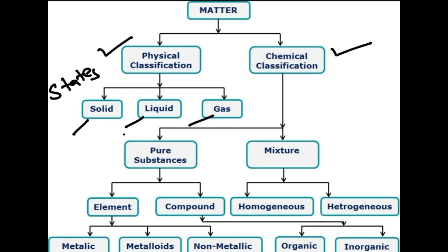There are actually four states of matter; the fourth one is plasma, which is often missing in basic charts. In the chemical classification, we have mixture — further divided into homogeneous and heterogeneous — and pure substance, which is classified into elements and compounds. Elements are further classified as metallic, metalloid, and non-metallic, while compounds include organic and inorganic.